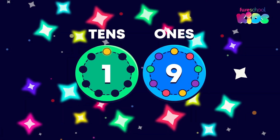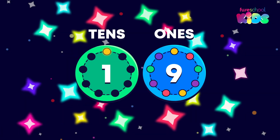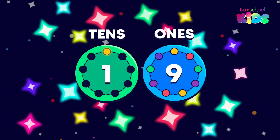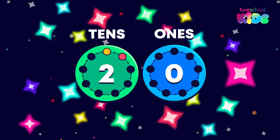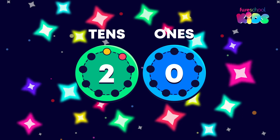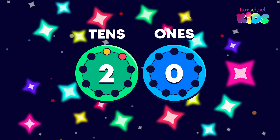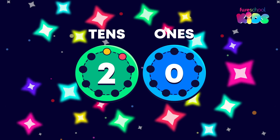We only have one more star to count. Do you know what comes after nineteen? That's right, it's twenty. How many tens do we have now? Two. And how many ones? Zero. That's why we write twenty as two zero.